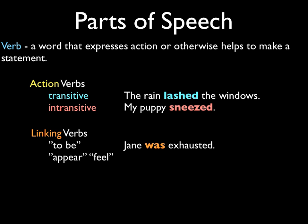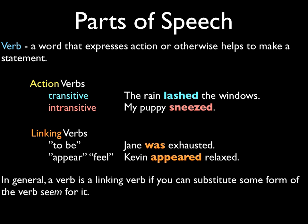Now there are other verbs that are kind of like 'to be,' such as appear or feel. 'Kevin appeared relaxed' — could we say 'Kevin was relaxed'? Yes, we could. But if we use the word 'appeared,' it draws a stronger image in our mind of how to picture Kevin, and relaxed and Kevin would be equal. In general, a verb is a linking verb if you can substitute some form of the verb 'seem' — if you can put 'seem' in the place of whatever linking verb you're trying out, then it probably is a linking verb.